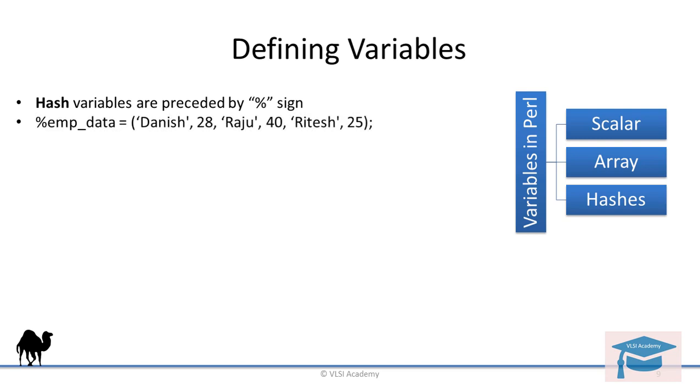This is how you define a hash in Perl. %emp_data is the hash name. Then danish comma 28, so danish is the key and value is 28. Raju is the key and value is 40. Ritesh is a key and 25 is the value. Key value, key value, key value. This is how you define your hash.